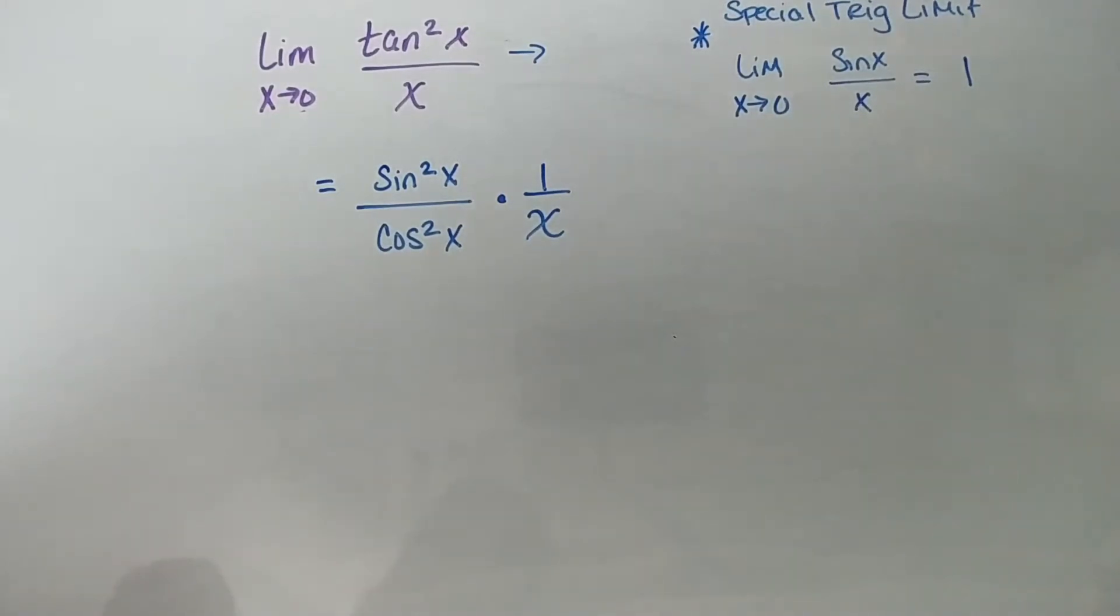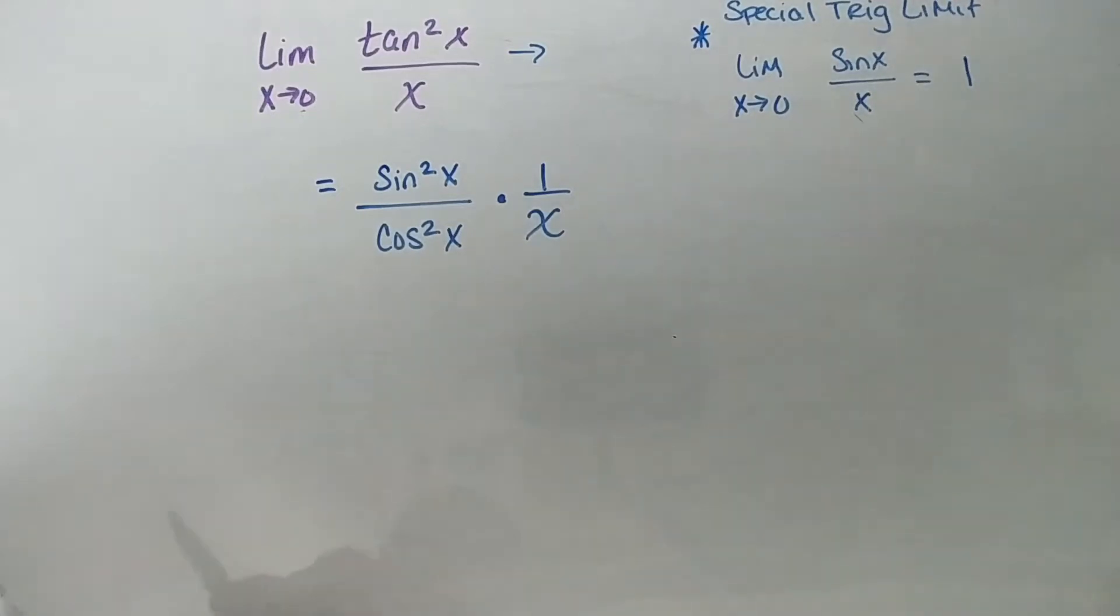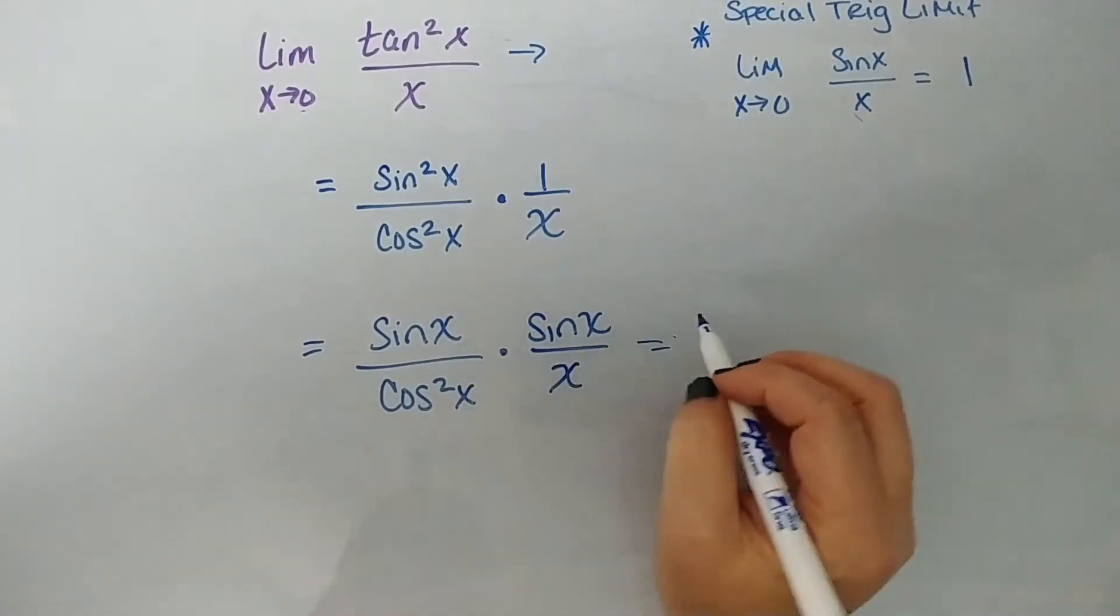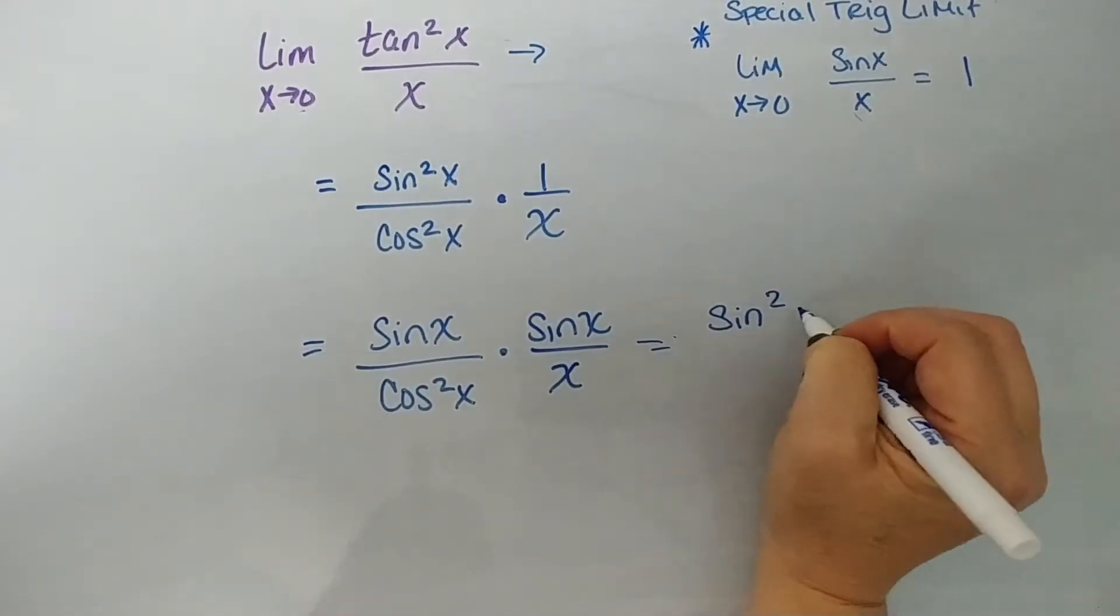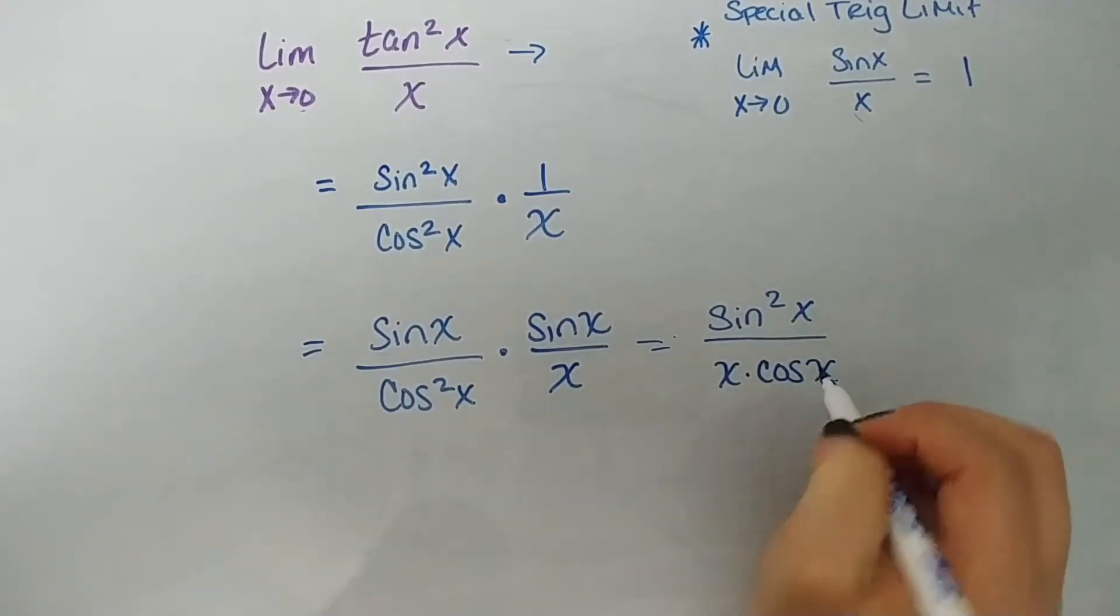So looking at this, I still have an x in the denominator. So that's still bad. But I have a sine squared over here. So I want to try and rewrite them so that I can get a sine x over x because I'm really close. So I know that if I take this sine squared and break it up as sine of x over cosine squared of x times sine of x over x, those would still multiply to give me sine squared of x all over x times cosine x, which is equal to what I have up there, okay?